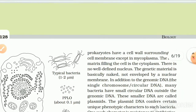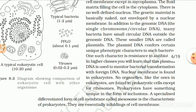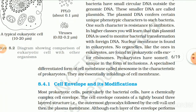All prokaryotes have a cell wall surrounding the cell membrane, except in mycoplasma. The fluid matrix filling the cell is the cytoplasm. There is no well-defined nucleus; the genetic material is basically naked, not enveloped by a nuclear membrane. In addition to the genomic DNA — the single circular chromosome DNA — many bacteria have small circular DNA outside the genomic DNA, called plasmids. The plasmid DNA confers certain unique phenotypic characters, such as resistance to antibiotics. This plasmid DNA is also used to monitor bacterial transformation with foreign DNA.